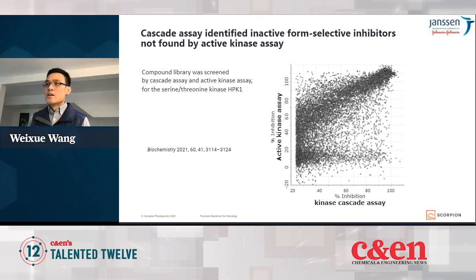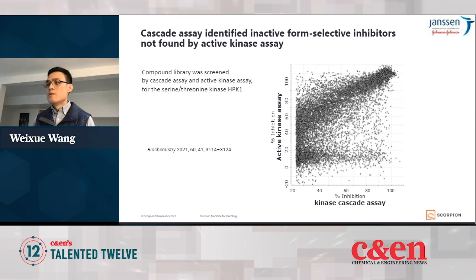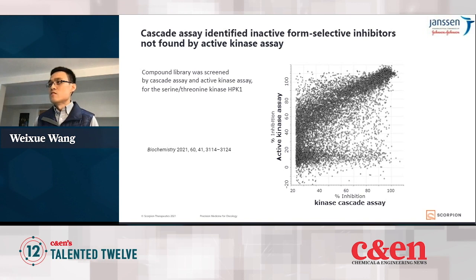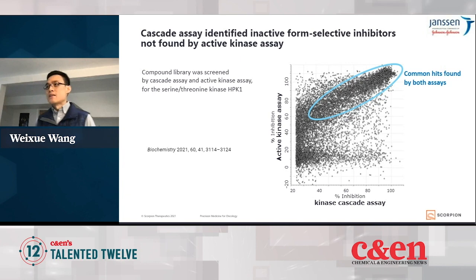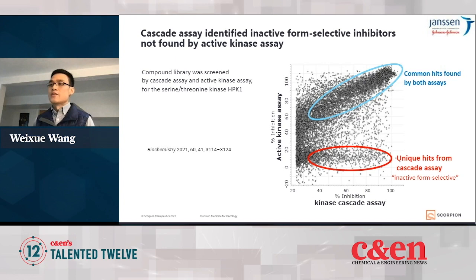Here's a great example. We screened over 700,000 compounds for a kinase called HPK1 using two types of assays: the active kinase assay and the kinase cascade assay. I show the percent inhibition for each compound from the two assays, where each dot represents a unique compound. From this plot, you can see there's a large group of compounds that showed inhibition in both assays — most of these bind to the conserved ATP binding pocket. There's also a second smaller group of compounds that showed inhibition only in the kinase cascade assay, and these are compounds that preferentially inhibit the inactive form of the kinase.